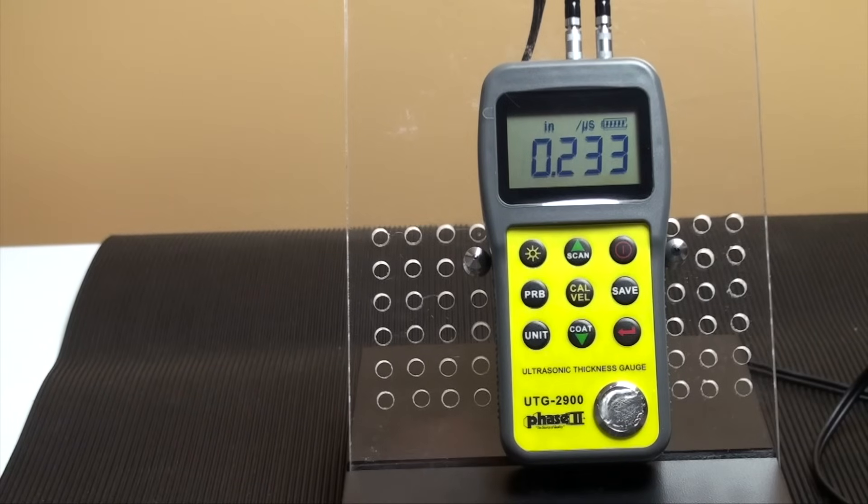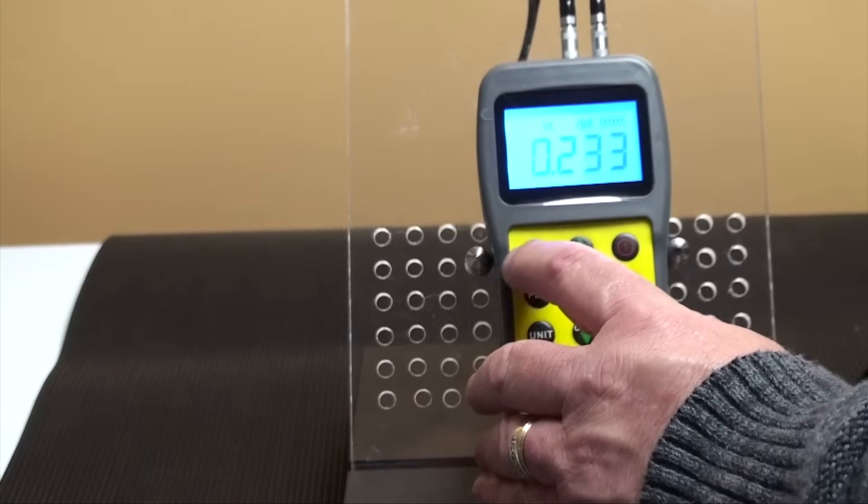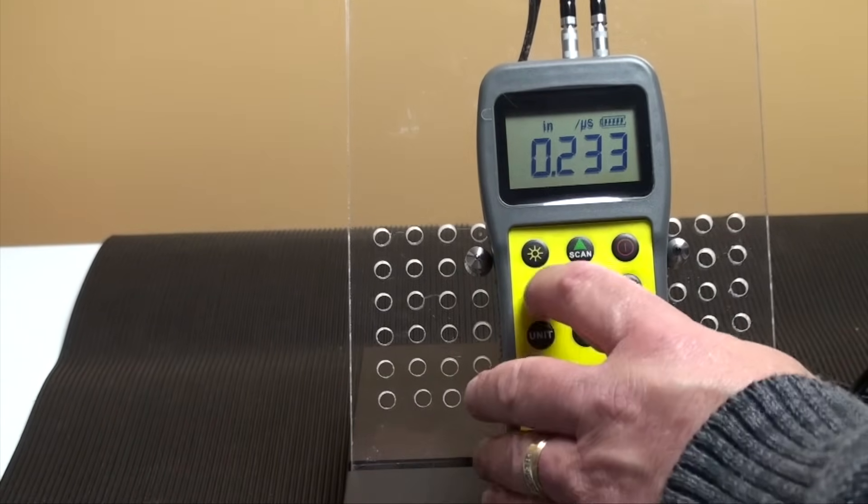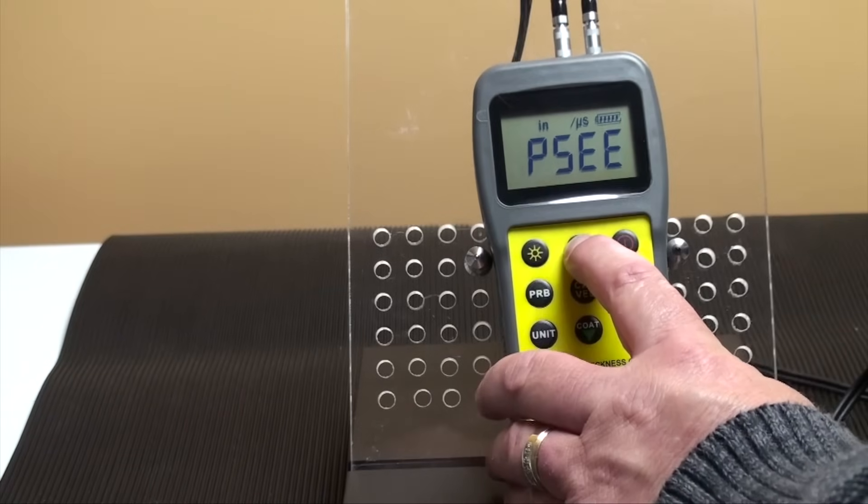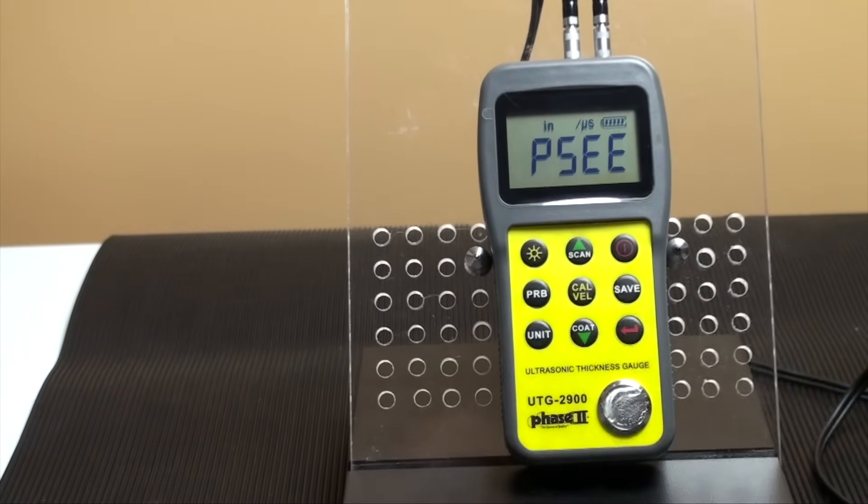The button on the bottom right is the enter key. To turn on the backlight, press the button on top left and press again to turn off. Pressing the probe key will allow you to change the probe setting in the menu. The unit is set to default on the general purpose probe included with the gauge.